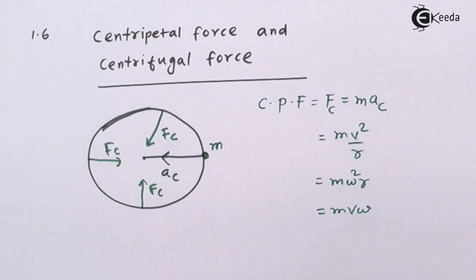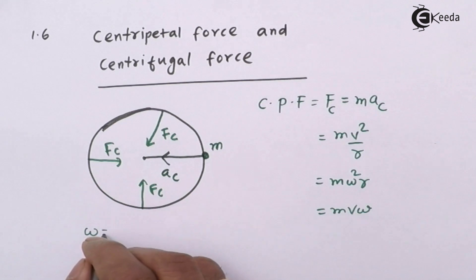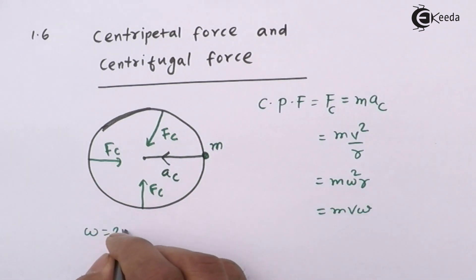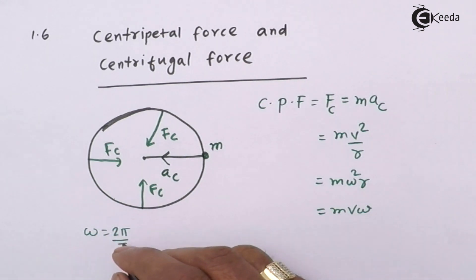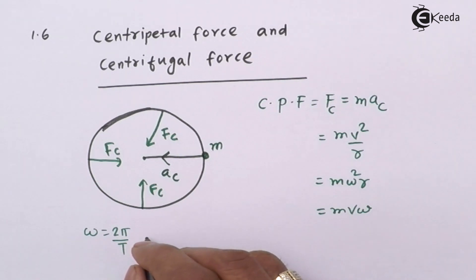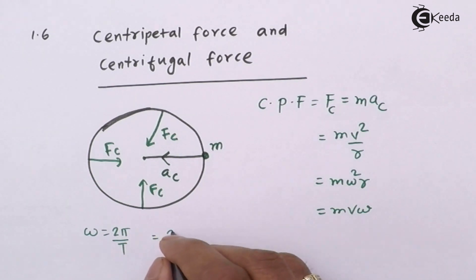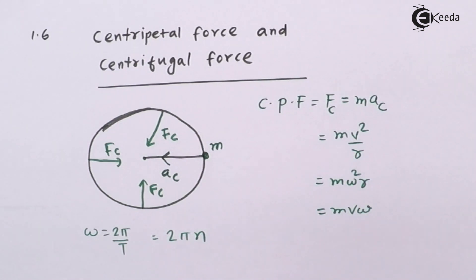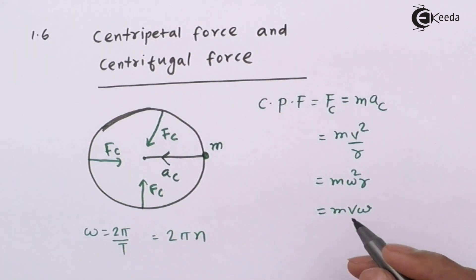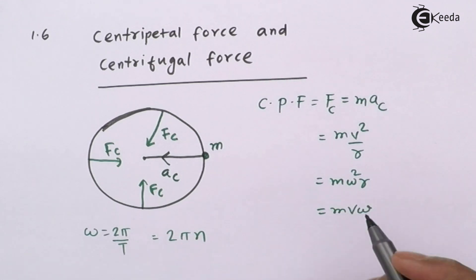So these are the formulas used. Omega can also be written as 2 pi over T, since theta over T, and this is also 2 pi N in terms of frequency. You can substitute it here and get another variation of Fc.